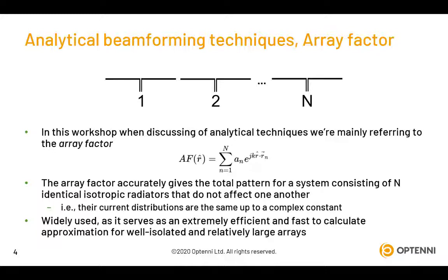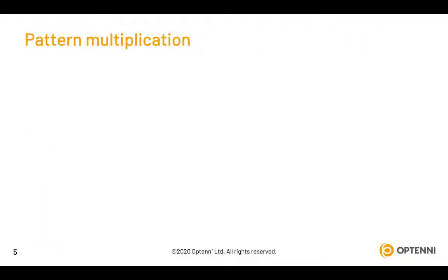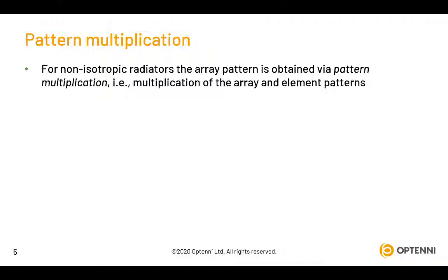The array factor is widely used because it is an extremely efficient and compact representation of a radiating system. Furthermore, for a well-isolated and relatively large array the approximations made are actually quite correct ones. The array factor assessment can also easily be expanded to non-isotropic radiators by implementing pattern multiplication, meaning the total pattern of an array can be obtained in an ideal case by multiplying the array and element patterns.